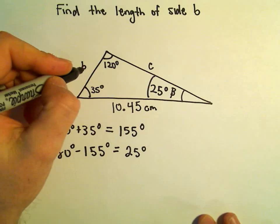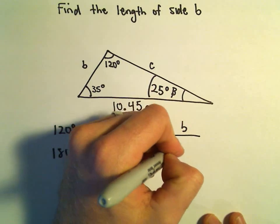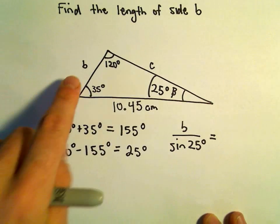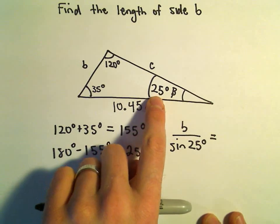So I'm going to take little b over sine of 25 degrees.